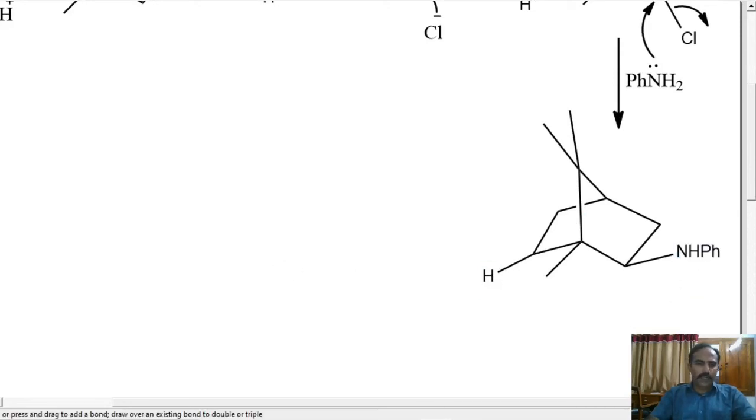Isobornyl aniline is formed and this on heating with sulfur produces a double bond here. Notice that there is a hydrogen here. So, heating with sulfur results in dehydrogenation.